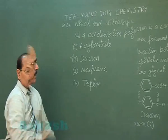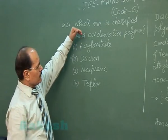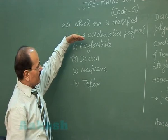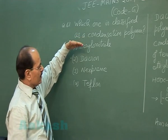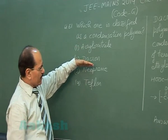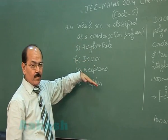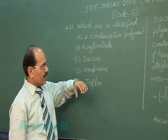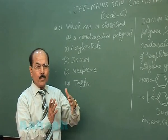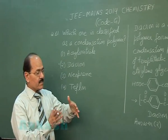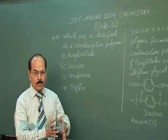So the correct answer is option 2. The other monomers — acrylonitrile, neoprene, and teflon — are used in homopolymers which are addition polymers.